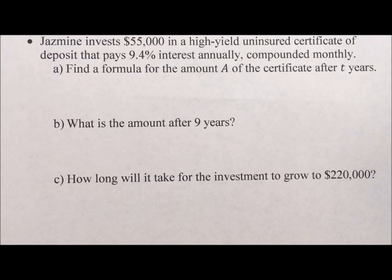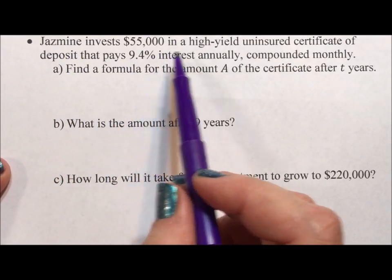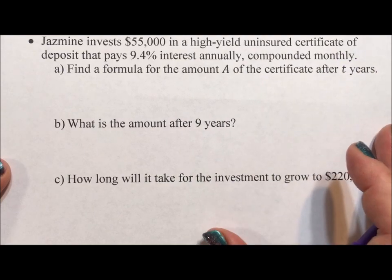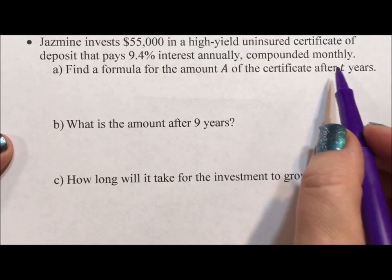Today I'm doing a series of videos on exponential equations and story problems and solving them. So Jasmine invests $55,000 in a high-yield uninsured certificate of deposit that pays 9.4% interest annually, compounded monthly.